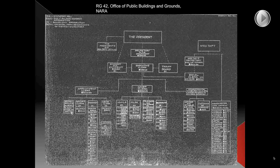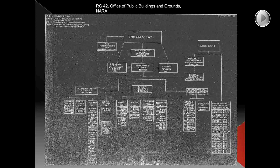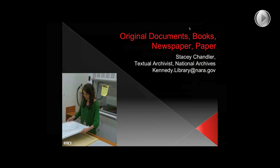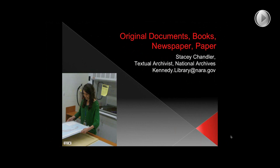Many of our students are going to be going through this process where they start with secondary research and are trying to get themselves into primary research. I'd like to turn things over to Stacy Chandler. She's a textual archivist at the John F. Kennedy Library, to talk about different types of primary sources you might uncover during your research. I'm Stacy Chandler, an archivist at the John F. Kennedy Presidential Library in Boston. We're part of the National Archives, so most of the examples I'm using today come from my library, but they will still apply to wherever you're doing your research.